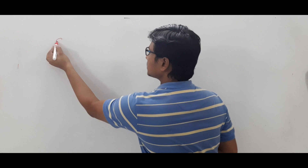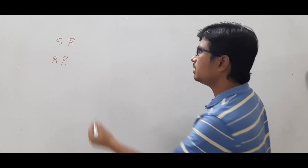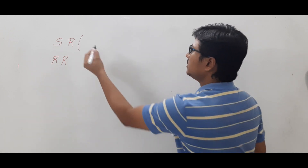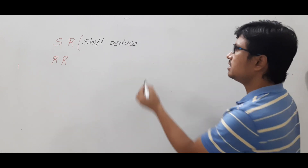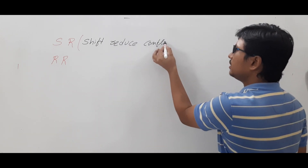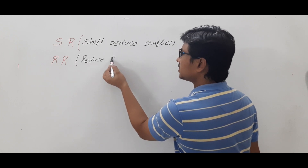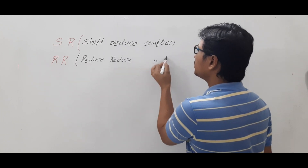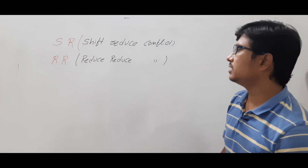The two conflicts are: SR conflict and RR conflict. SR stands for Shift-Reduce conflict, where S stands for shift and R stands for reduce. RR is the Reduce-Reduce conflict, where both R's stand for reduce. So we have two types of conflicts in LR0 items.